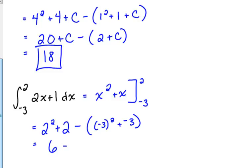Negative 3 squared is positive 9. Positive 9 plus negative 3 is 6. So this one's actually 0.